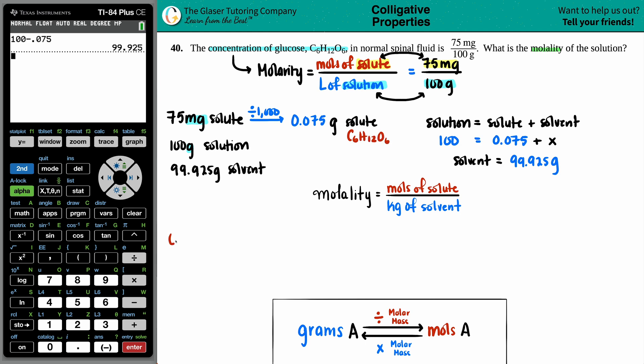So now I want to take the 0.075 grams of the C6H12O6 and convert it into moles of C6H12O6.